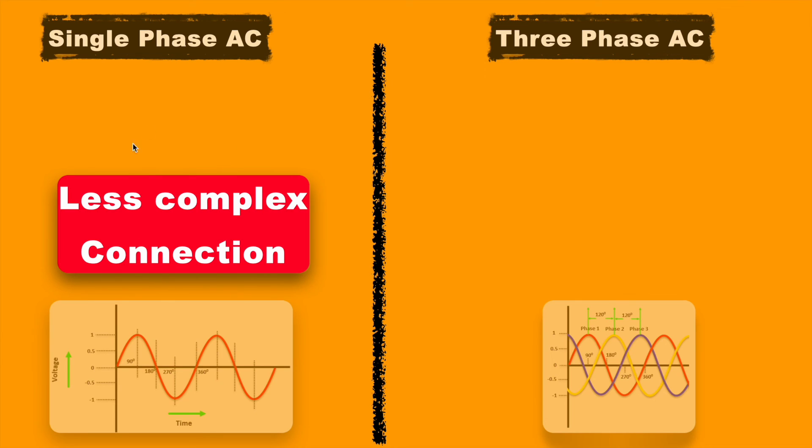As the single phase power supply uses just 2 wires, its connection is very simple. While 3 phase power supply uses delta and star configuration, its connection is more complex.